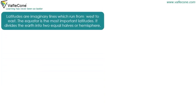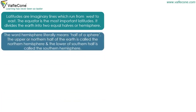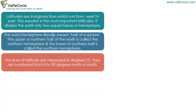Latitudes are imaginary lines which run from west to east. The equator is the most important latitude. It divides the earth into two equal halves or hemispheres. The word hemisphere literally means half of a sphere. The upper or northern half of the earth is called the northern hemisphere, and the lower or southern half is called the southern hemisphere.